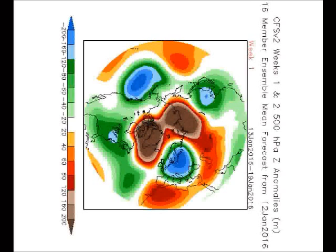Now, taking a look over these next few weeks: this is the mean of the 500 millibar pattern from the CFS longer range model. This is week one, the 13th to the 19th of January, so the short-range details. Lower than normal heights — effectively low pressure at the surface in this region — higher than normal heights and high pressure in this region, and there's the northerly flow that we're seeing at the moment and over these next few days.